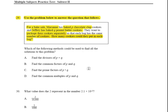this is a simple factoring question. Notice that you have A as finding the divisors of P and Q, finding common factors, finding the prime factors, and finding the common multiples of P and Q. It's a factoring question.